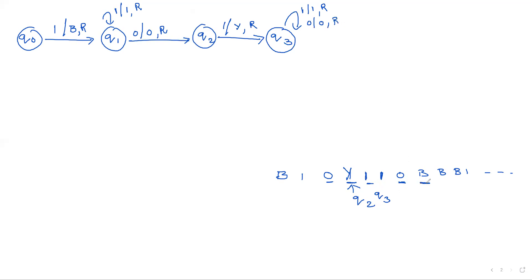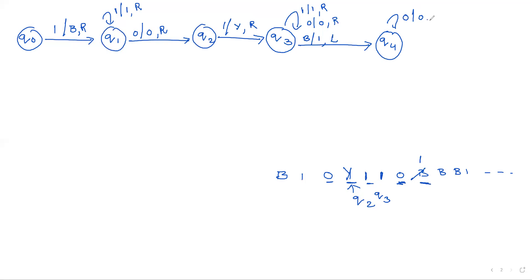Right now I am at this position. Whenever a blank symbol occurs, that blank is replaced with one and then move to the left direction. In the left direction, any number of zeros are replaced with zero and move left; ones are replaced with one and move left.